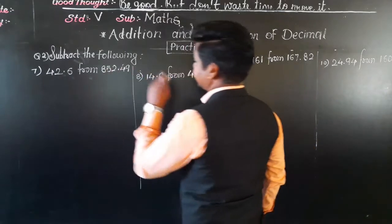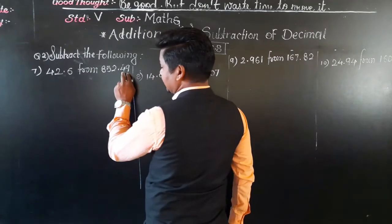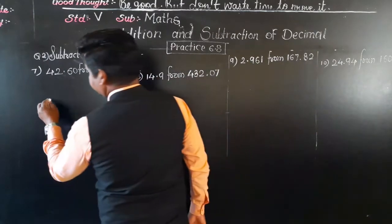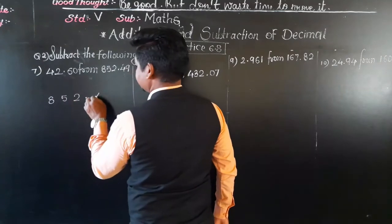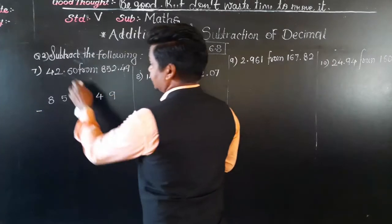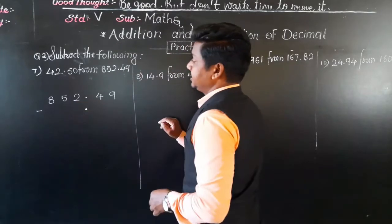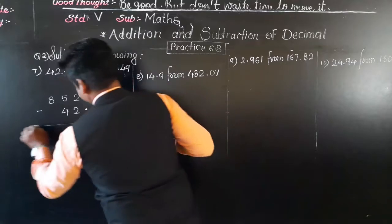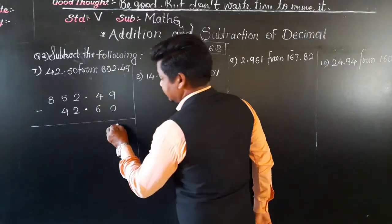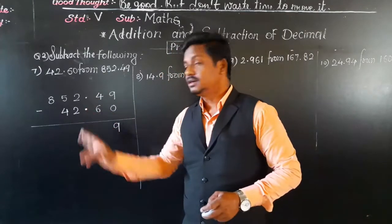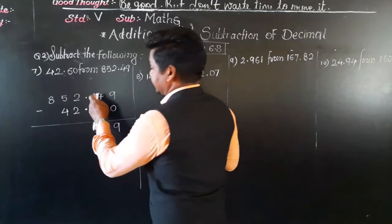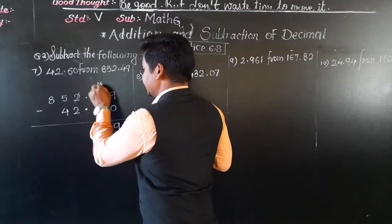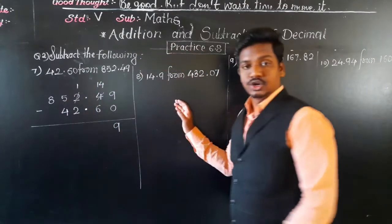First make them like decimals: 42.6 has one decimal place and 852.49 has two, so put one zero to get 42.60. Now write 852.49 on top minus 42.60 below, with decimal points aligned. Starting from the right: 9 minus 0 is 9. Next, 4 minus 6 is not possible because 4 is smaller. So we take 1 borrow from the 2 beside it: 4 becomes 14 and the 2 remains 1. Now 14 minus 6 is 8.